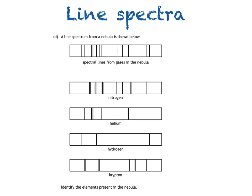So to do that, all we have to do is compare the line spectra from each of the four elements in turn with the line spectra from the gases in the nebula.